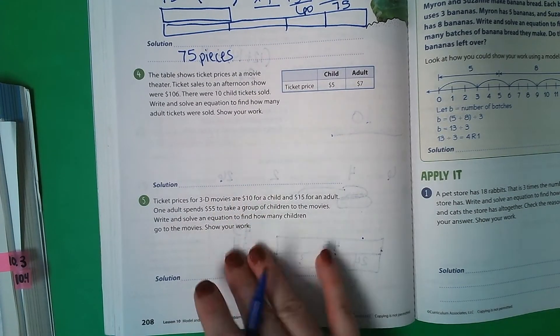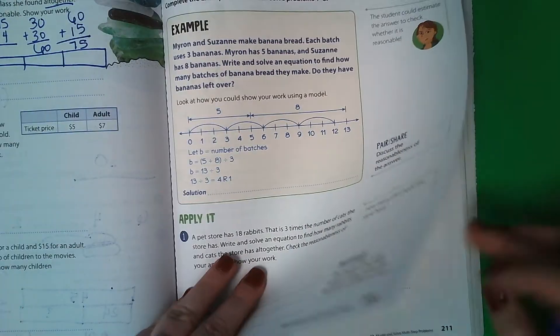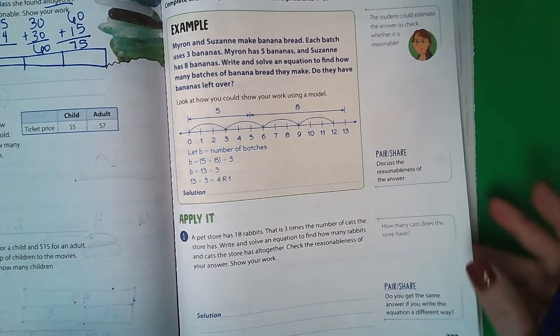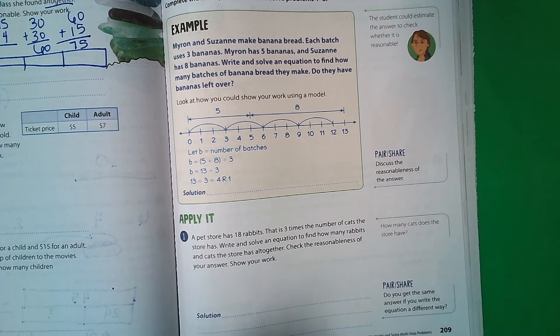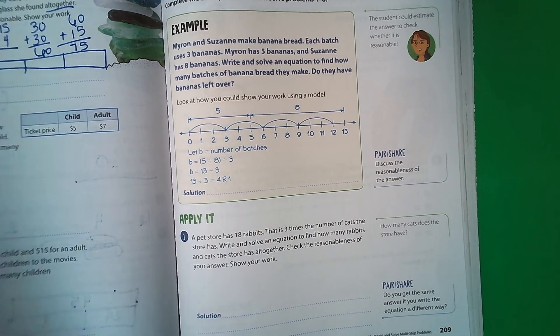Then go ahead and have your parents check numbers 4 and 5. You are going to complete pages 209, 210, 211, and 212 on your own. When you are finished with those pages, then you will need to check your answers from the answer key that I'm going to post. That is it for today. Let me know if you need anything. Thank you for joining us.